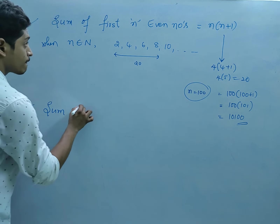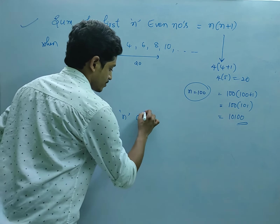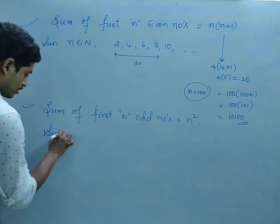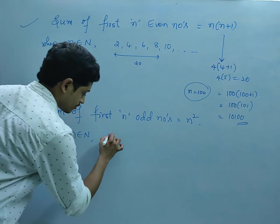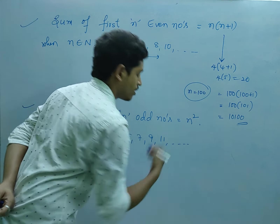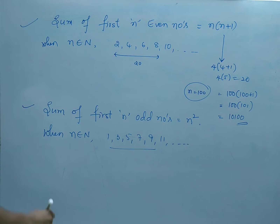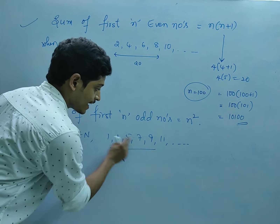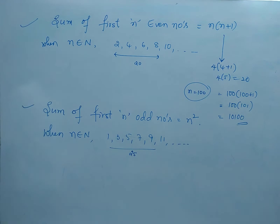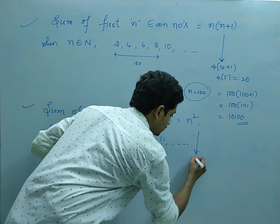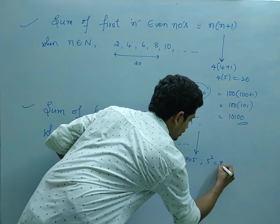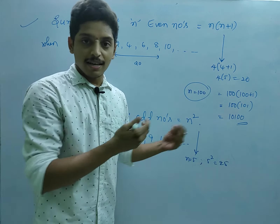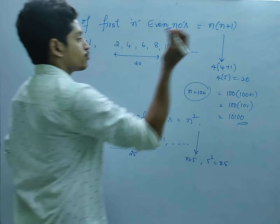The second formula: the sum of first n odd numbers is equal to n squared. The odd numbers are 1, 3, 5, 7, 9, 11 and so on. For example, the sum of the first 5 odd numbers: 1+3+5+7+9=25. Using the formula with n=5: 5²=25. These two formulas are very important — please note them, as they are very useful for competitive exams.